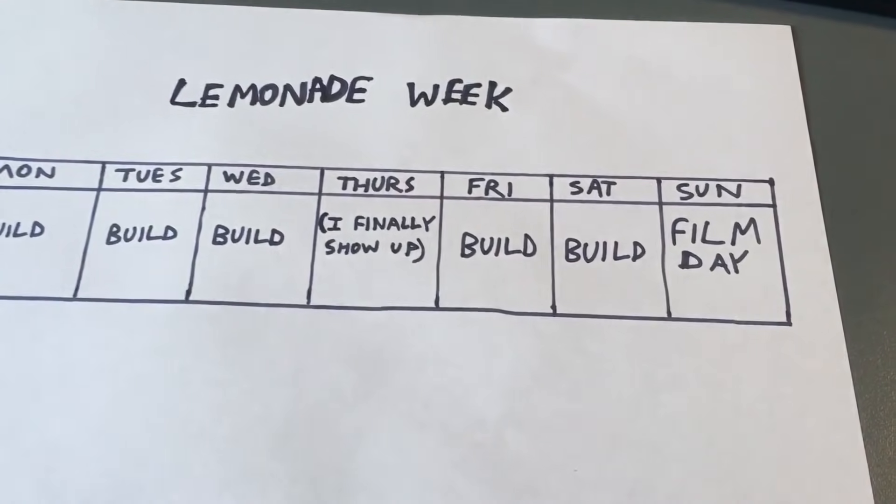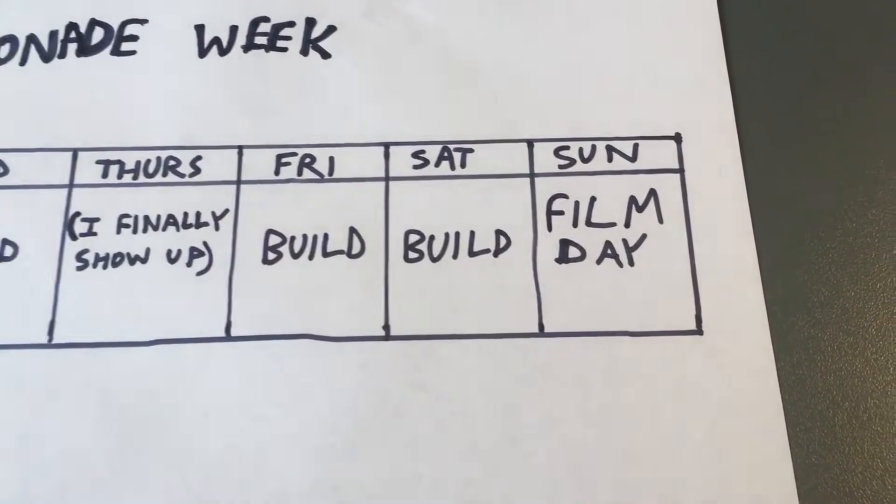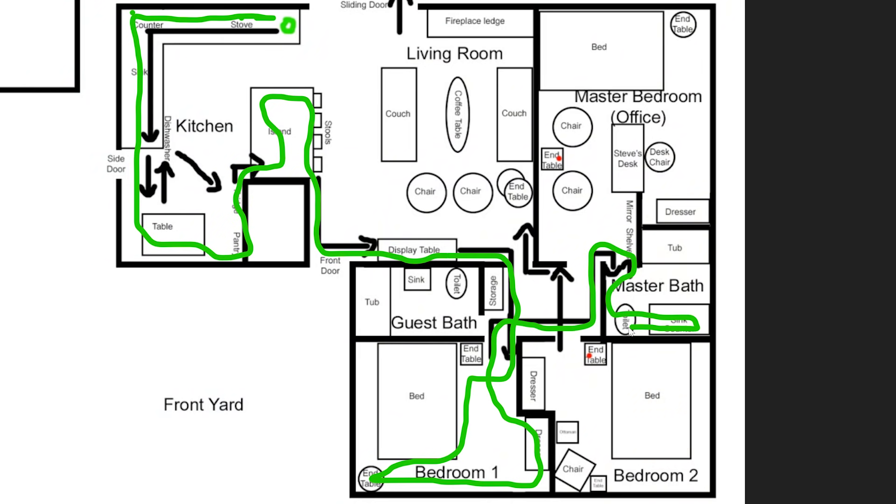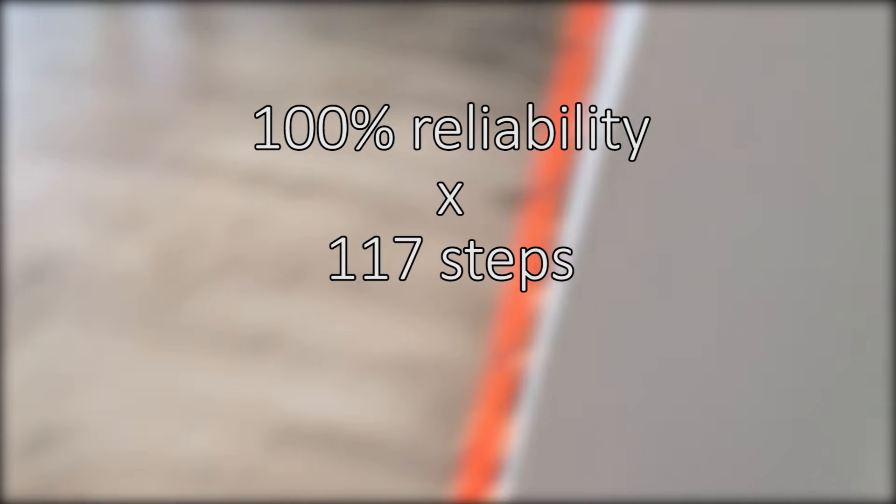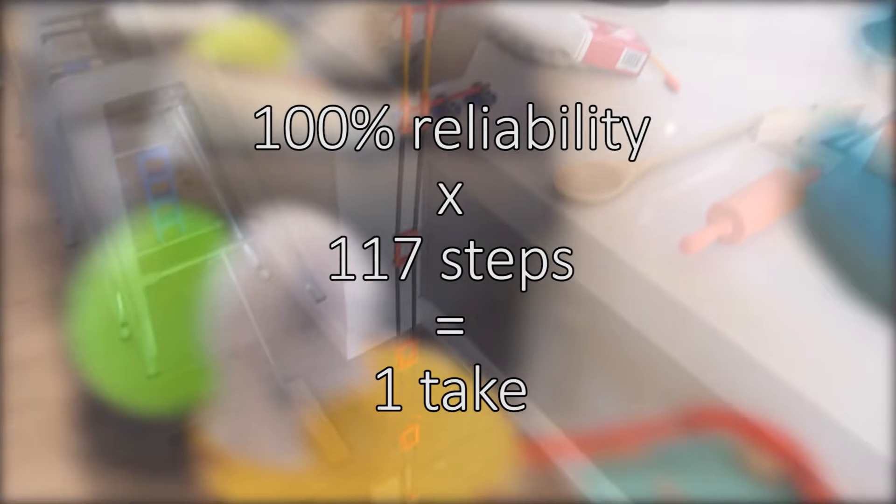We started attempts on Sunday to film the whole thing in one go. If a step of the machine failed, every separate section before it had to be reset. If each section worked 100% of the time, we could have filmed the whole thing on the first try. But,